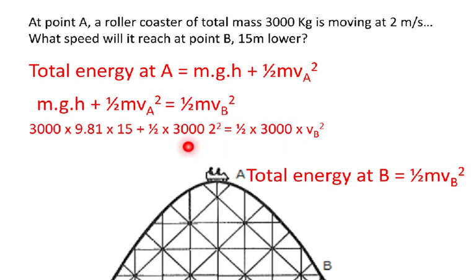Now all we need to do is put the numbers in. The only thing we don't know is the velocity at B. And by rearranging and solving for B, we find that B is 17.2 metres per second.